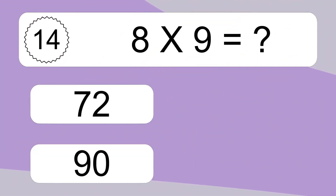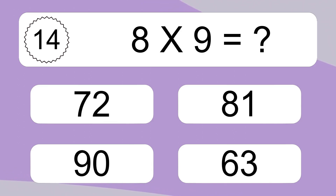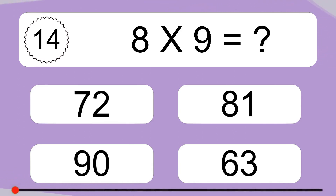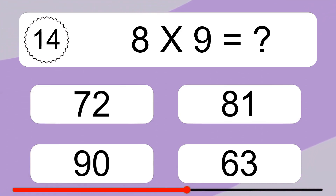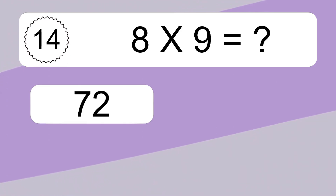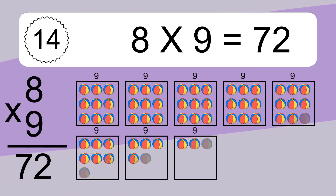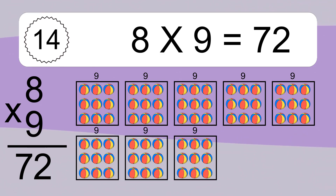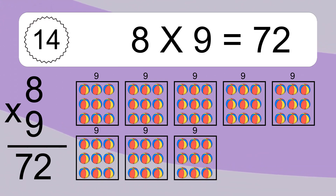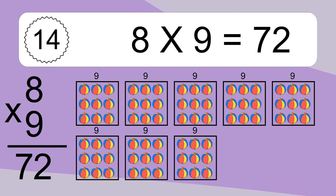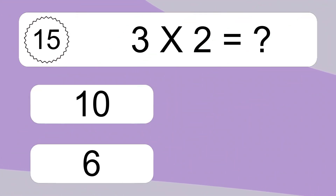8 times 9 equals what? 8 times 9 equals 72. We have 8 boxes and each box has 9 colorful balls inside. If you count all the balls in all the boxes together, you will have 8 times 9 balls. This equals 72 balls.